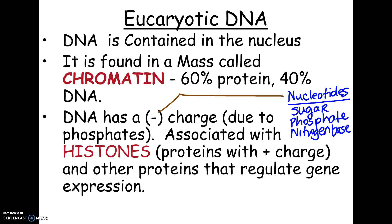The phosphate groups — going back to our biochemistry chapter — have four oxygens and a bunch of negative charges. So because of that, DNA has an overall negative charge. The importance of this is that the proteins in chromatin — remember chromatin was 60% protein — are called histones.